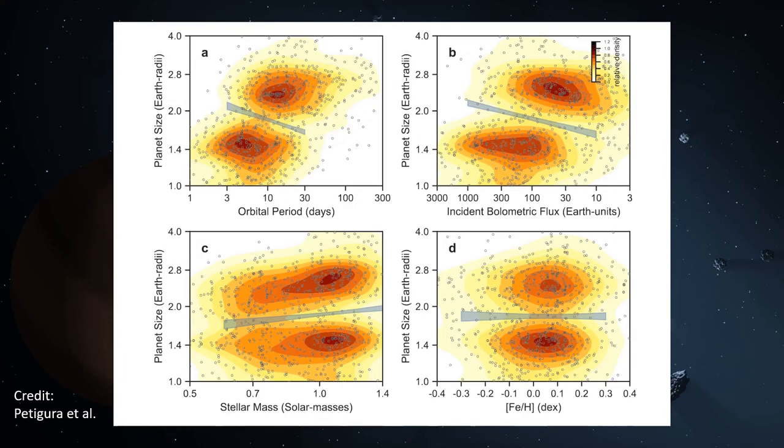Here's a zoomed-in version of the same figure where they've marked exactly where the radius gap falls. What's believed to cause the radius gap is ultraviolet light from the star evaporating the hydrogen-helium atmospheres of the mini-Neptunes. Planets that fall in the radius valley will have a very small atmosphere, only about 0.1% of their mass, and that small atmosphere will evaporate very quickly, causing the planet to move down to a lower radius in the super-Earth population.